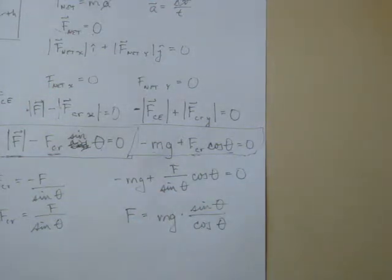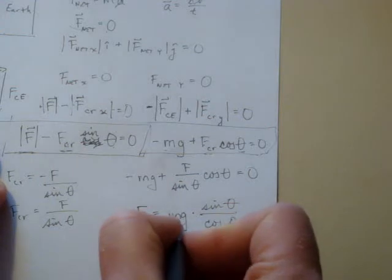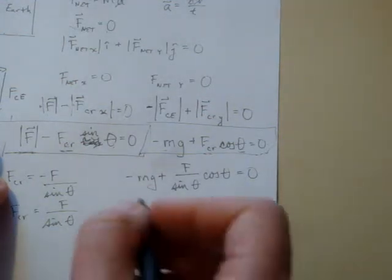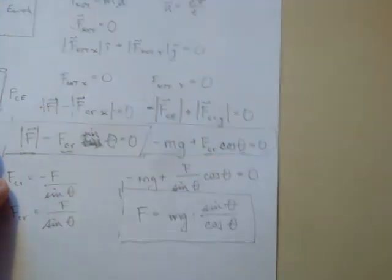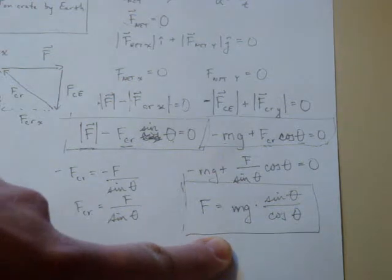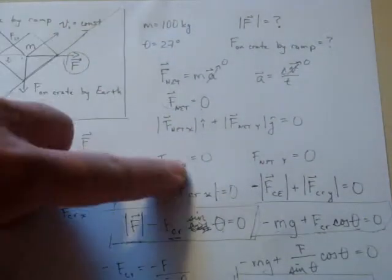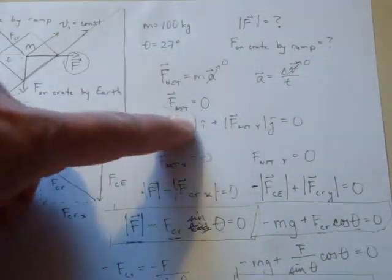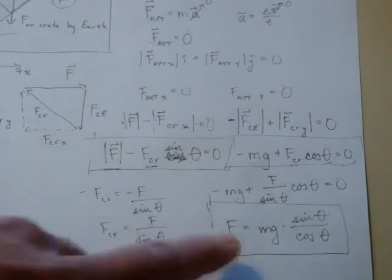If any of those algebra steps went by too quickly, ask someone to clarify — I tend to go through algebra rather quickly. But we now have this nice relationship: the magnitude of a perfectly horizontal external force on a ramp equals mg · sin θ / cos θ. This equation won't be found in any book because there are too many possible contexts, but we derived it simply by summing forces and splitting into components.